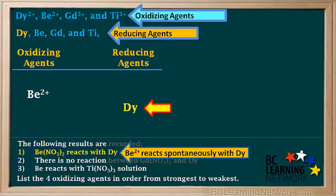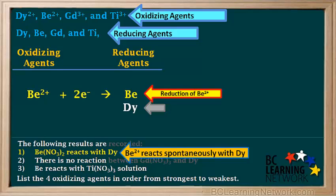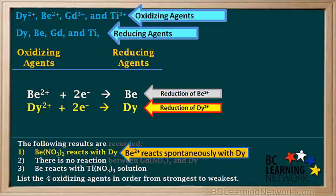Because BE2+ reacts spontaneously with DY, and DY is a reducing agent, we write DY somewhere below it on the right. We can then complete the half reactions: the reduction half reaction for BE is BE2+ + 2e⁻ → BE, and the reduction half reaction for DY is DY2+ + 2e⁻ → DY.